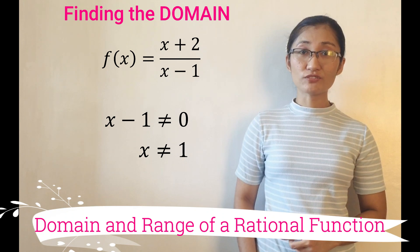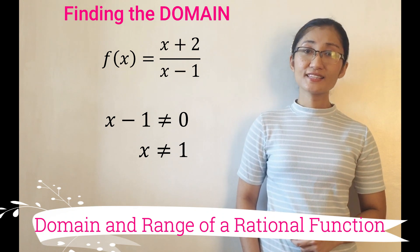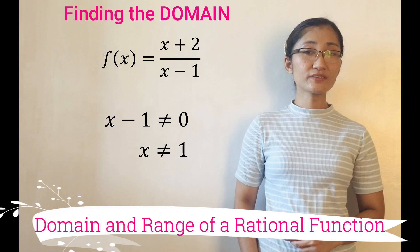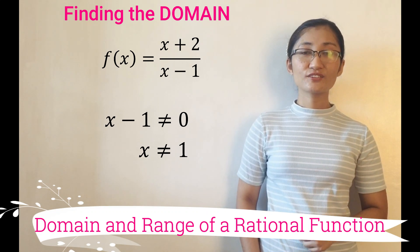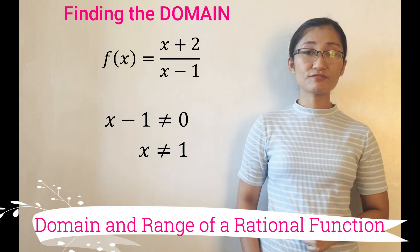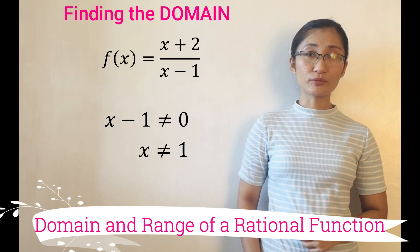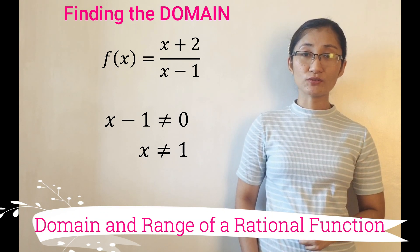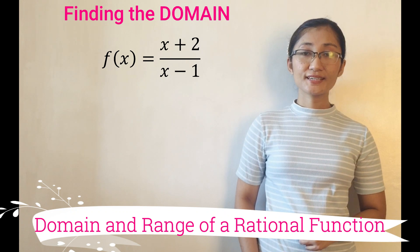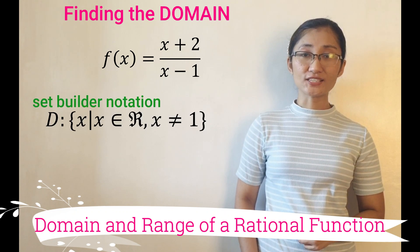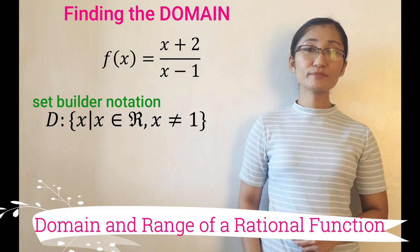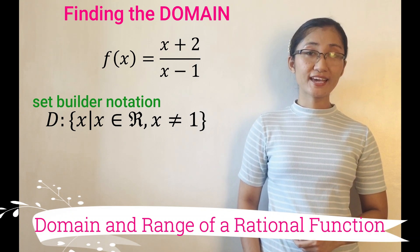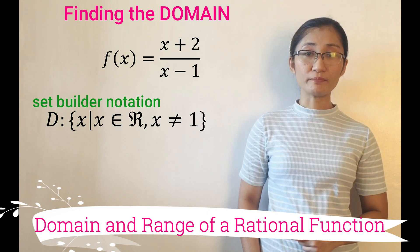This is the restriction for x values, and aside from 1, all other real numbers can be values of x. Therefore, the domain of the given function is the set of real numbers except for positive 1. It can be written using set builder notation: domain is the set of x such that x is an element of all real numbers but x is not equal to positive 1.